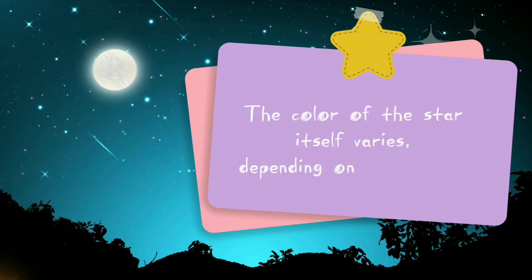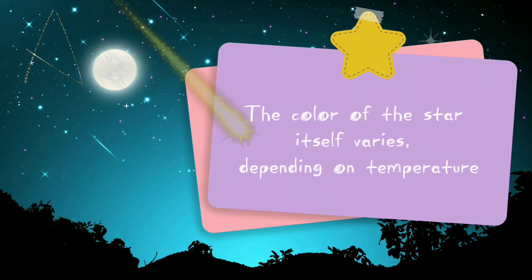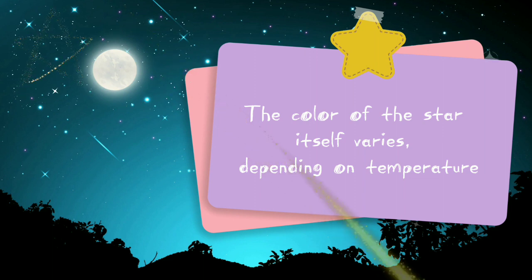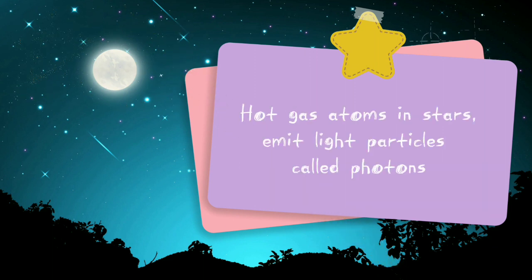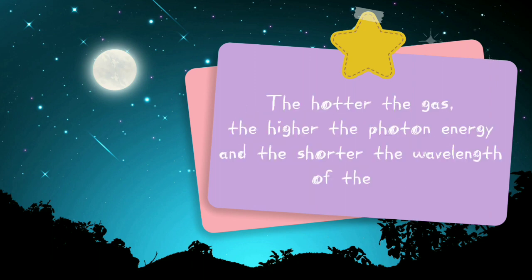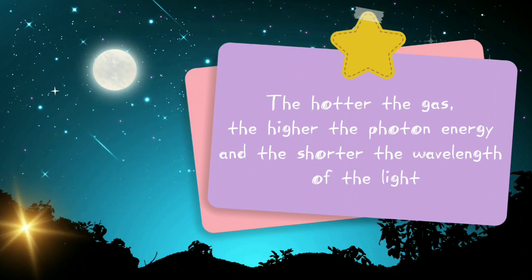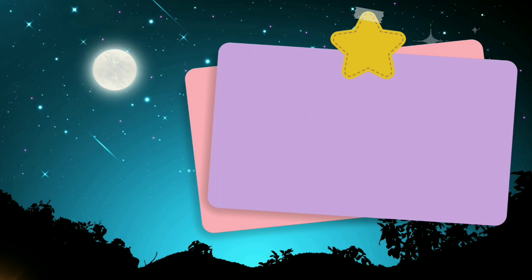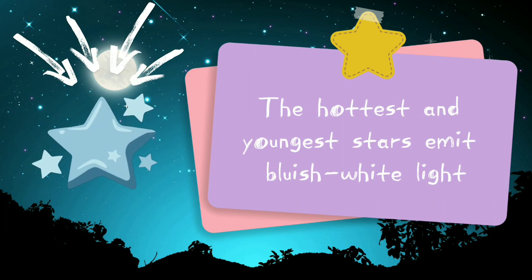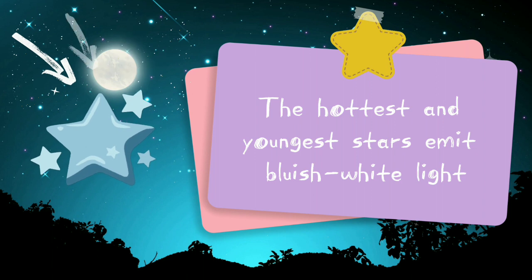The color of the stars varies depending on temperature. Hot gas atoms in stars emit light particles called photons. The hotter the gas, the higher the photon energy and the shorter the wavelength of the light. The hottest and youngest stars emit bluish white light.